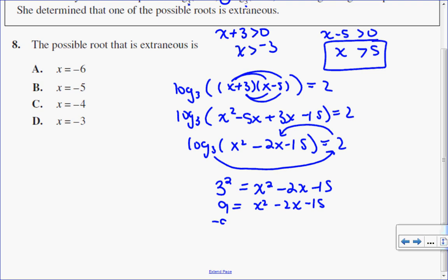Subtract 9 from both sides, and I get 0 equals x squared minus 2x minus 24. So I do in fact have a quadratic. So I'm going to factor that.